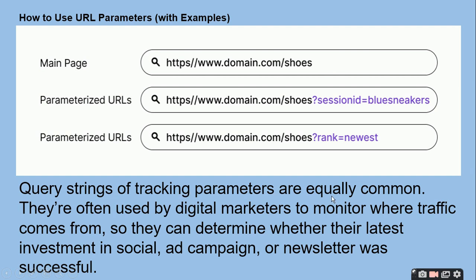Query strings and tracking parameters are equally common; they are often used by digital marketers to monitor where traffic comes from, so they can determine whether their latest investment in a social ad campaign or newsletter was successful or not. Aur is se marketer chalk out karte hain ki unke paas traffic aa raha hai ya nahin — taaki unka campaign ya ad ka payment fulfill ho aur profit ho.